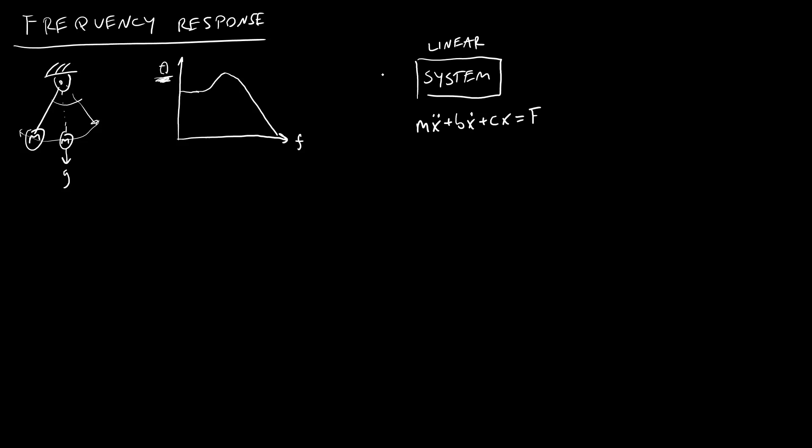If this system is linear, and my input is a sine wave, so say the force I'm applying is sinusoidal if it's a mechanical system, or the voltage I'm applying is sinusoidal if it's an electrical system, then the output is also going to be a sine wave, and that is the specific case where this graph applies.